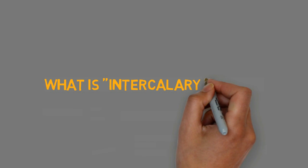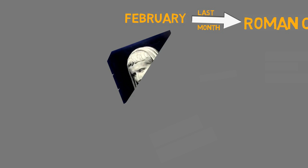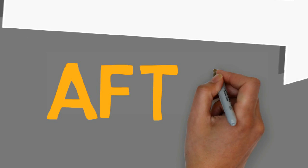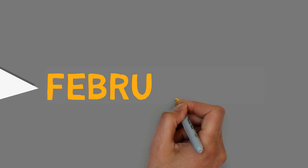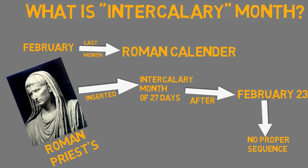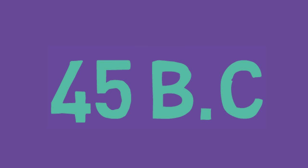What is an intercalary month? February was normally the last month of the Roman calendar, as the year originally began in March. At certain intervals, Roman priests inserted an intercalary month after February to realign the year with the seasons, but this was not done in any proper sequence.